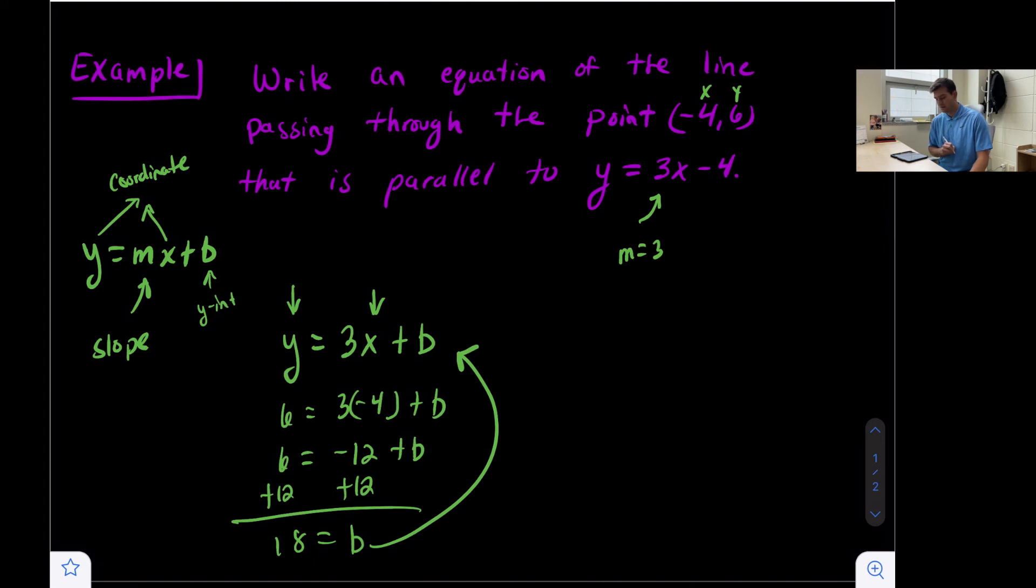Now we plug b = 18 into our equation to get our final answer: y = 3x + 18. This line is parallel to y = 3x - 4 because they have the same slope and different y-intercepts. That's how you write an equation of a parallel line.